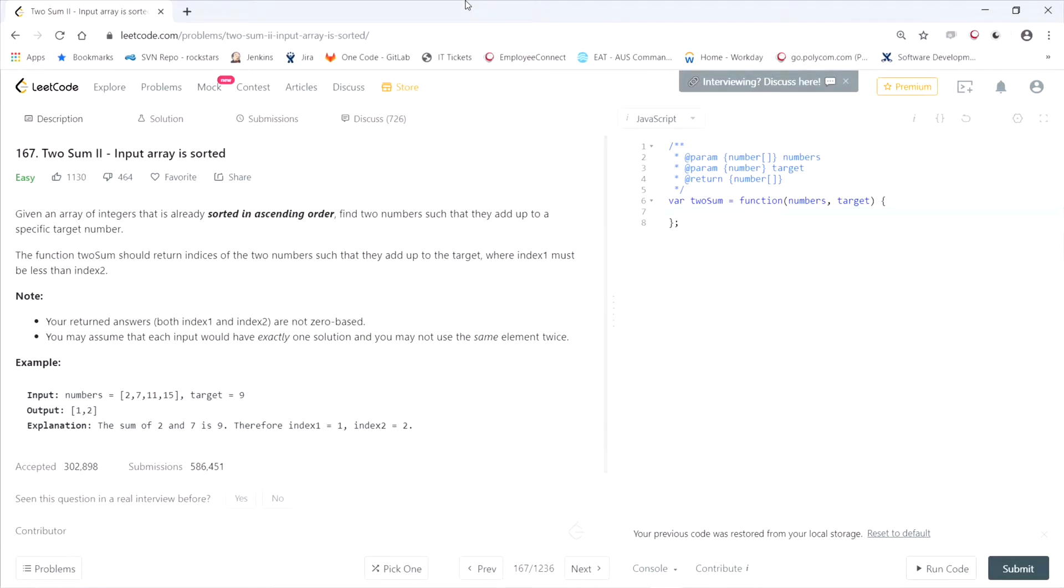All right, this LeetCode question is called Two Sum II: Input array is sorted. It says given an array of integers that is already sorted in ascending order, find two numbers such that they add up to a specific target number. The function twoSum should return indices of the two numbers such that they add up to the target where index one must be less than index two.